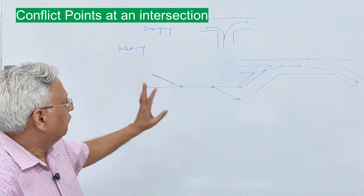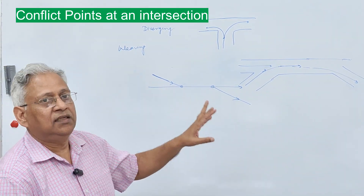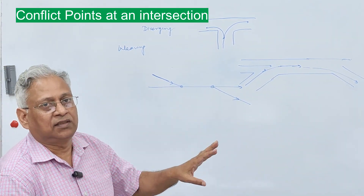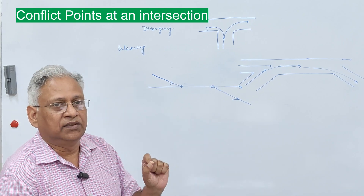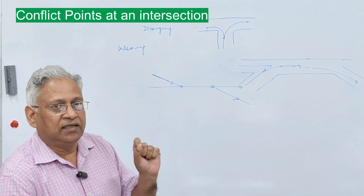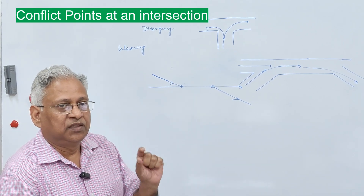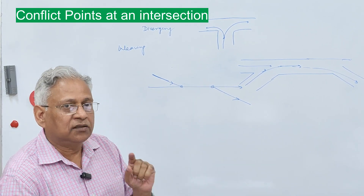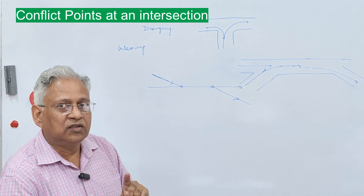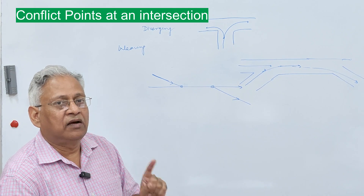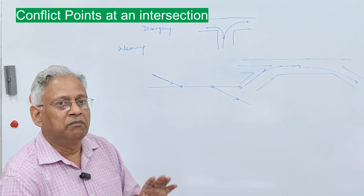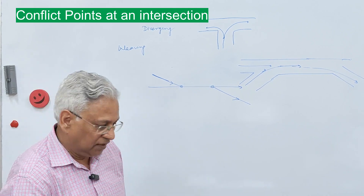So these are the four types of movement at an intersection: weaving, merging, diverging, and crossing. Out of these, crossing is considered the major point of conflict, whereas merging, diverging, and weaving are minor. Now let us see how we draw these conflict points at a T-intersection and how many points of conflict exist there.